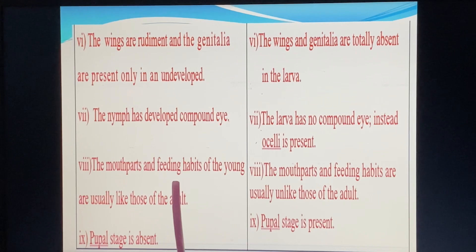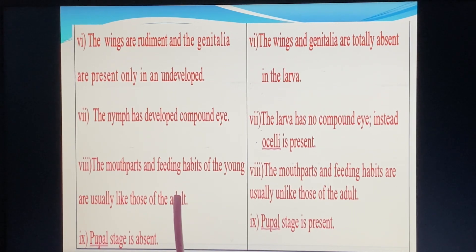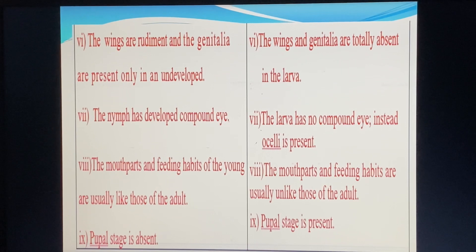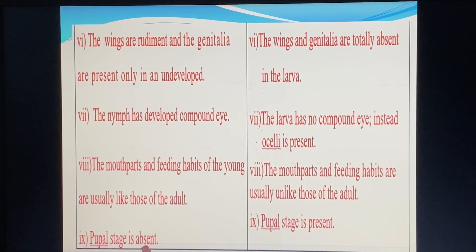In incomplete metamorphosis, mouthparts and wing pads are not developed. The mouthparts of the adult are a perfect, fully-developed tool, whereas in the nymph they are undeveloped.